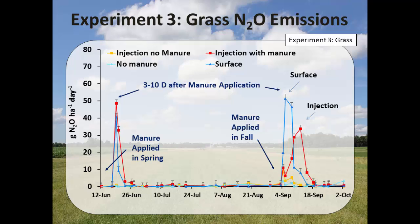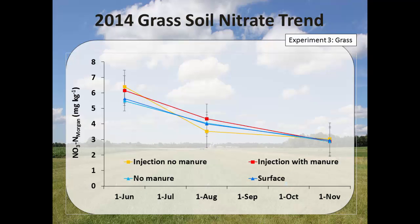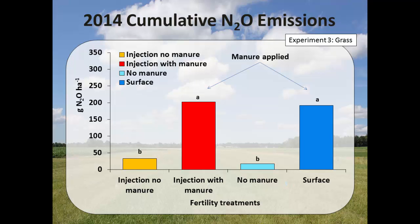This is the trend of nitrous oxide emissions in grass during the growing season. We saw a big peak after manure application in spring, but really nothing at the major rainfall events. We applied manure two times to grass — in spring and fall. In fall, we saw two very similar peaks, but the injection peak came slightly later. The cumulative nitrous oxide emissions show no difference between surface application and injection, with higher emissions for manure plots compared to no-manure plots.